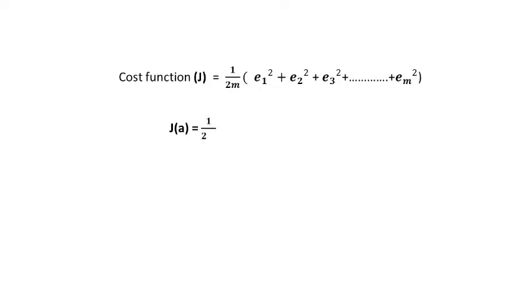We can also write it as 1 by 2m summation of y predicted minus y actual square. We just expanded ei's to y predicted minus y actual. We can also write it as 1 by 2m summation of a naught plus a1x1 minus y actual square. We just expanded y predicted, which is a naught plus a1x1, as per our model.